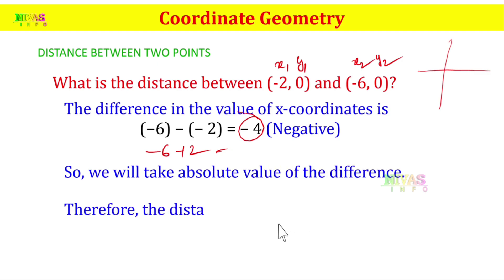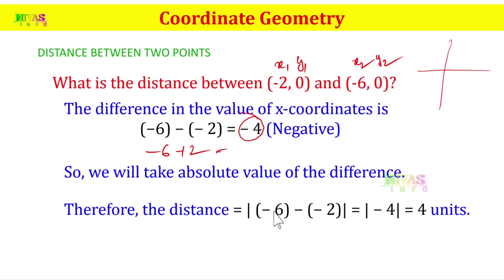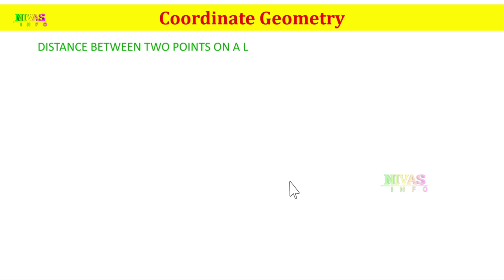Therefore, the distance equals the absolute value of (-6) minus (-2), which equals the absolute value of -4, which gives us 4. So the distance between (-2, 0) and (-6, 0) is 4 units. We take the absolute value of the distance. First, we take graph paper and represent the two points to show the difference.